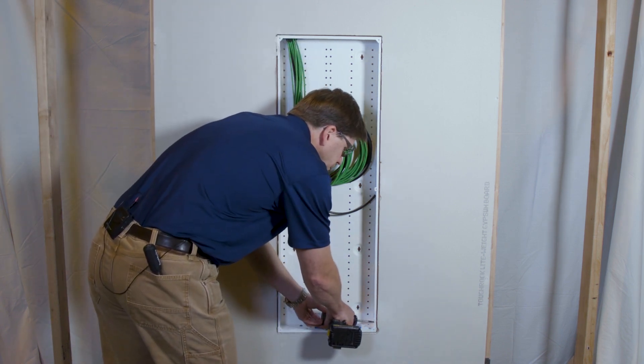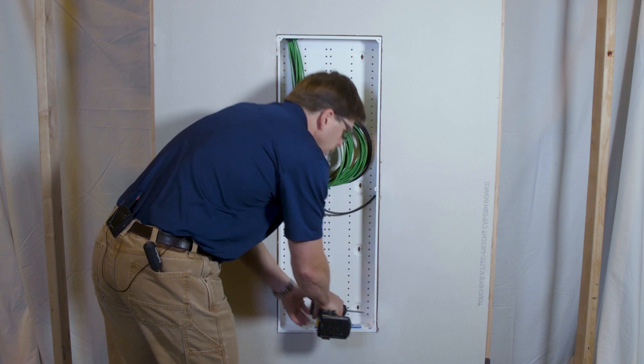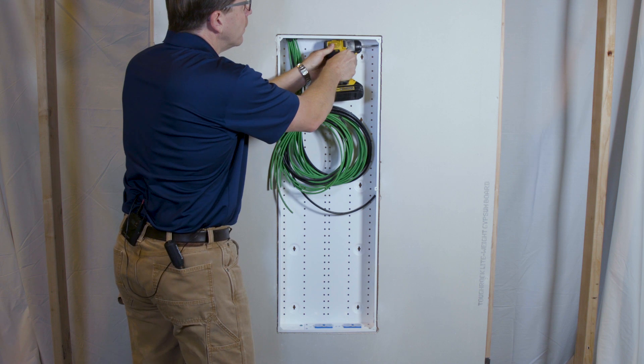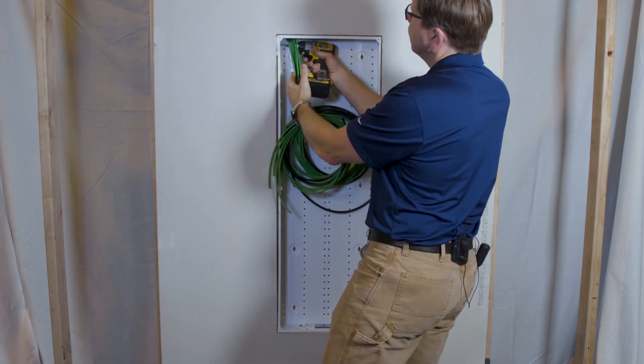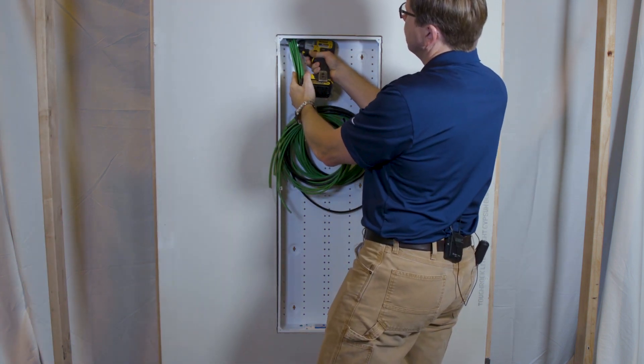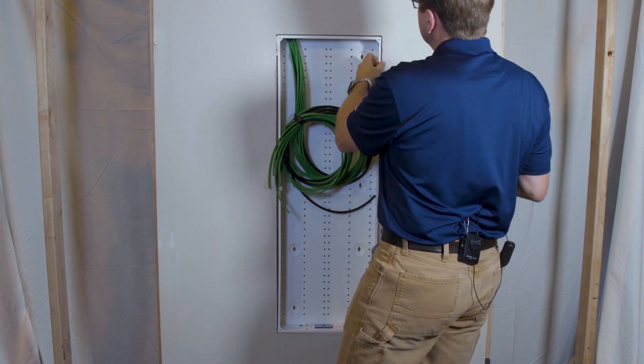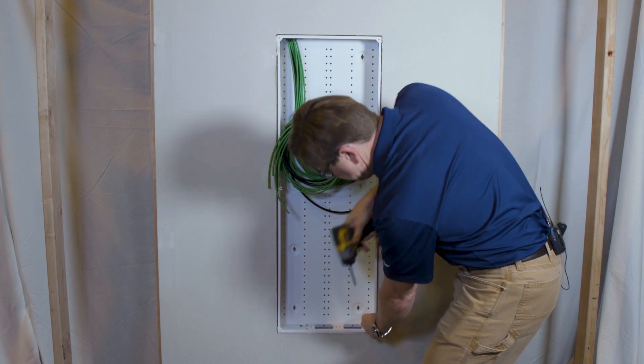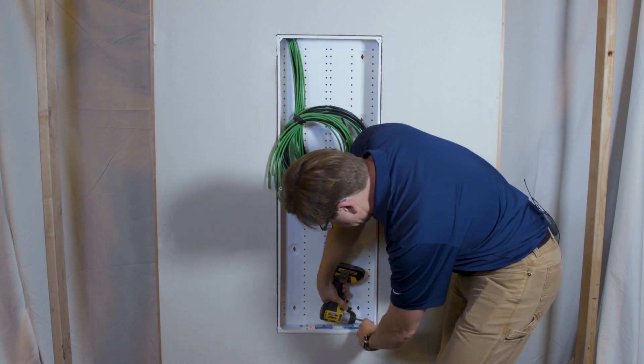So I'll loosen the screws, and then pull the box out till it's flush with the edge of the drywall, and tighten them up.